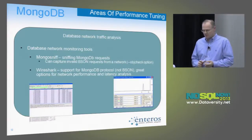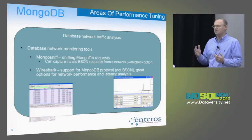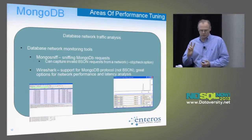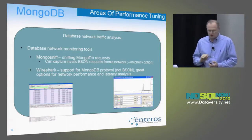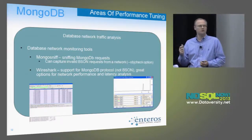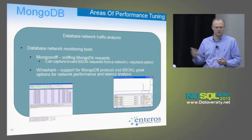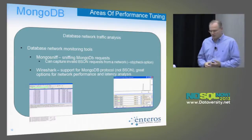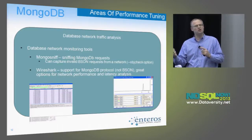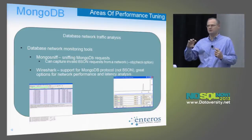Another important area is the ability to analyze data at the network protocol level. There is mongosniff — not provided by default, you have to build it from source — but once built, it sits on the protocol and shows you what BSON requests are being sent. This is useful for capturing invalid BSON requests: you can run it with the --objcheck option and it will capture corrupted BSON requests, which is very important for troubleshooting driver issues.